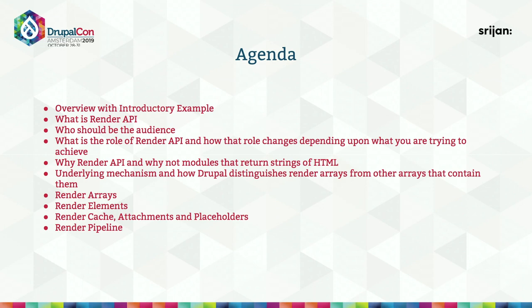Just to set the context, I'll start with an introductory example. We will talk about what Render API is, who the audience for this API should be, and the role of Render API and how that role changes depending on what you're trying to achieve — whether you're a module developer or working on the front-end side. We'll also cover why Render API is preferred over modules that return strings of HTML, the underlying mechanism, and the main components: render arrays, elements, cache, attachments, placeholders, and the render pipeline.